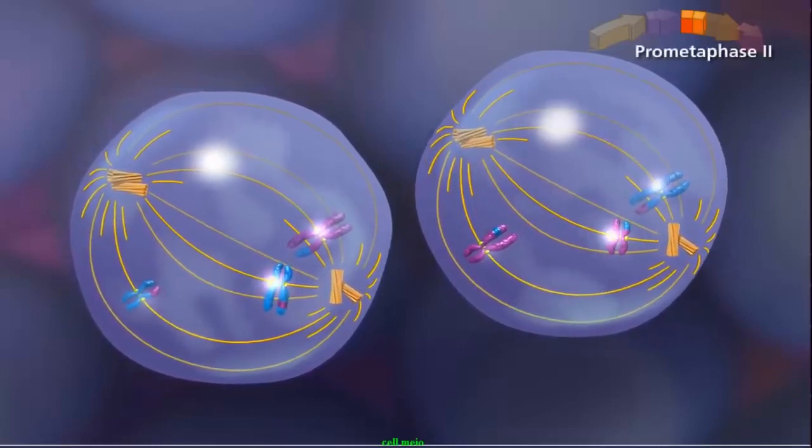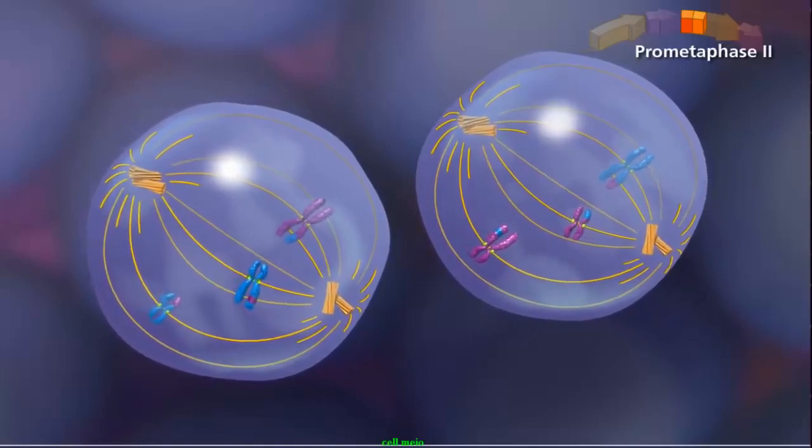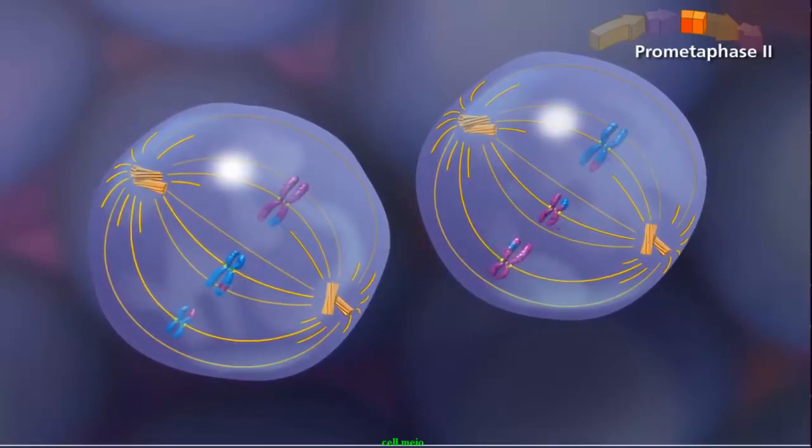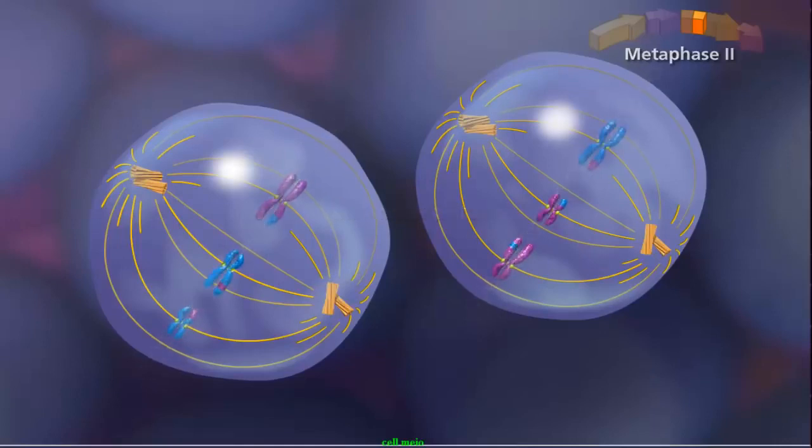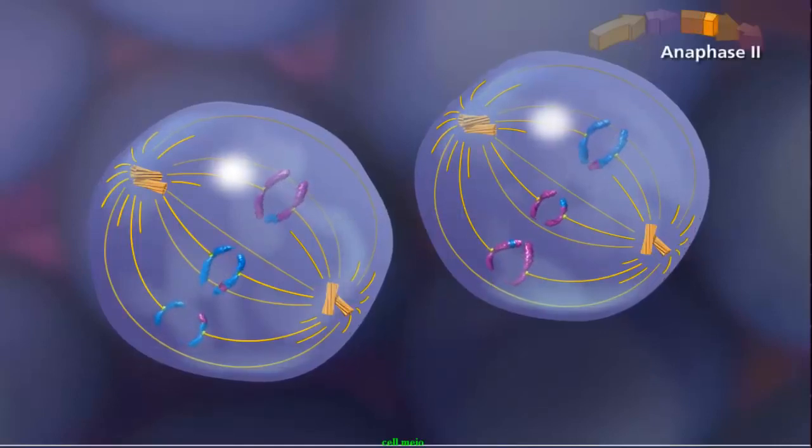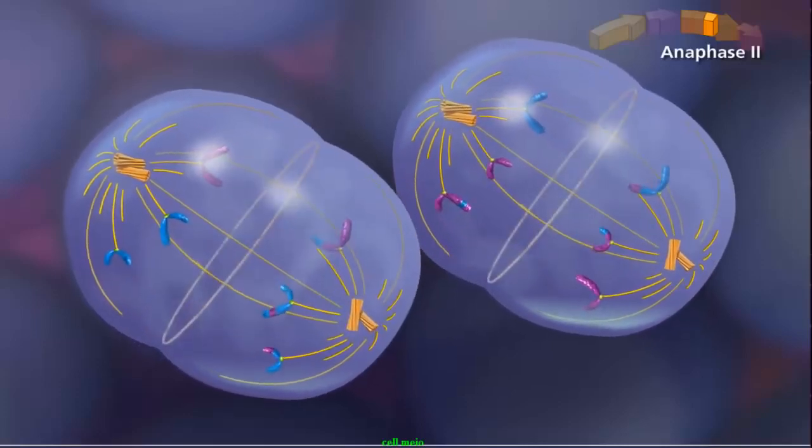In prometaphase II, the sister chromatids attach to the spindle by kinetochore microtubules, with sister chromatids attached to opposite poles. The spindle aligns the sister chromatids along the metaphase plate during metaphase II. During anaphase II, sister chromatids separate and individual chromosomes move toward the poles.